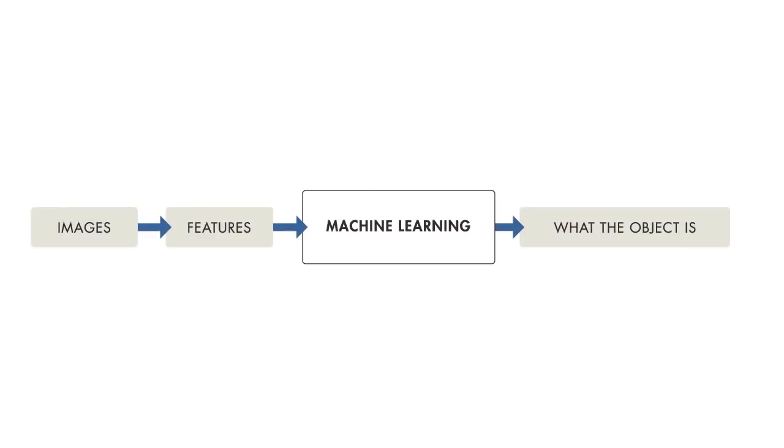When solving a machine learning problem, you follow a specific workflow. You start with an image, and then you extract relevant features from it. Then you create a model that describes or predicts the object.